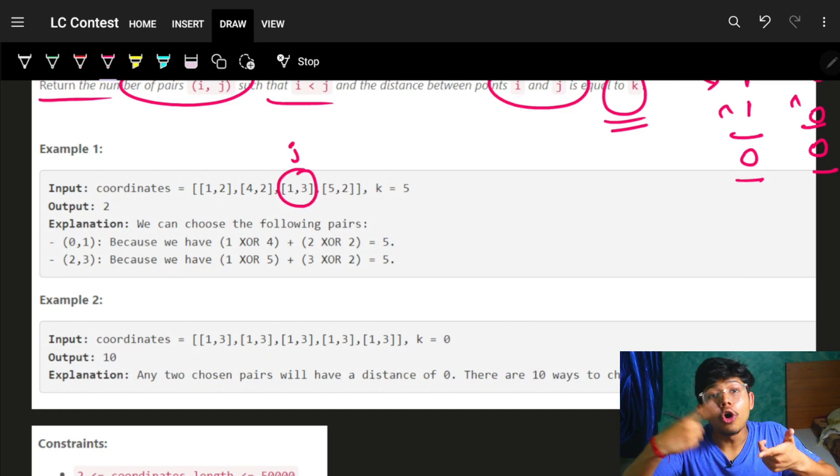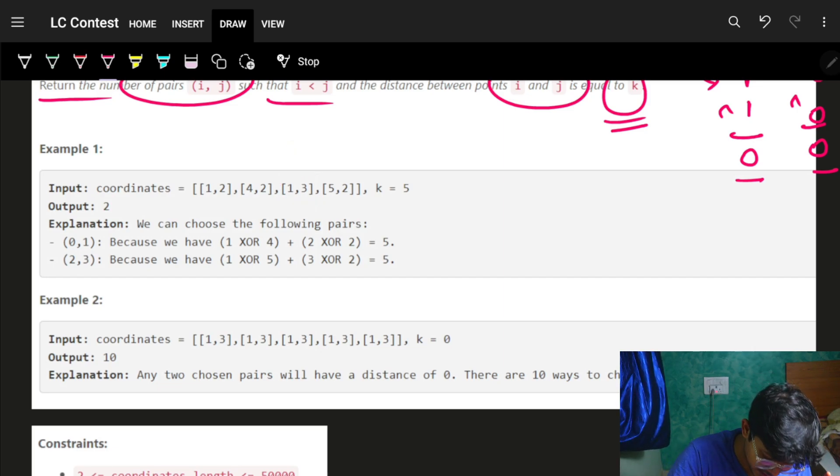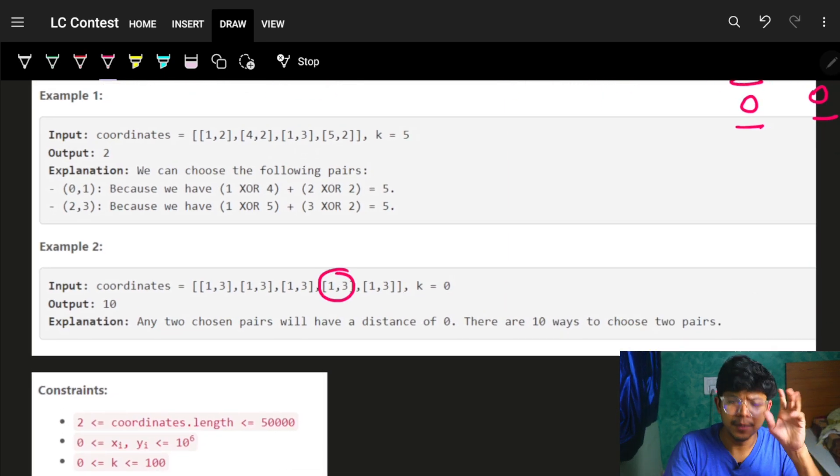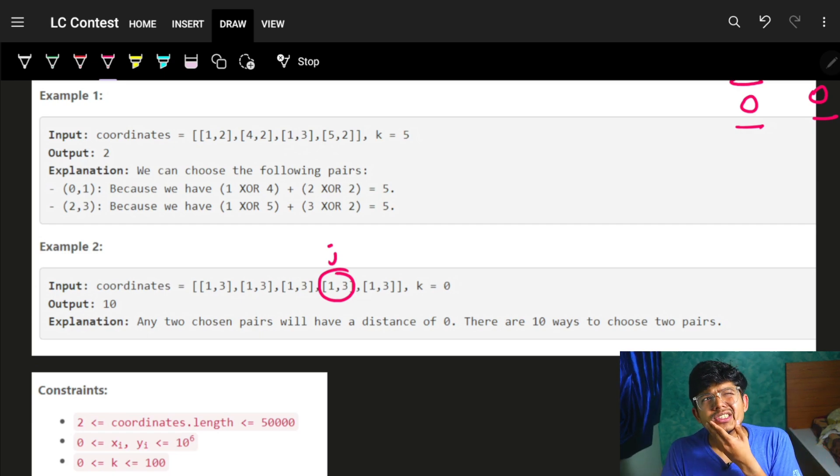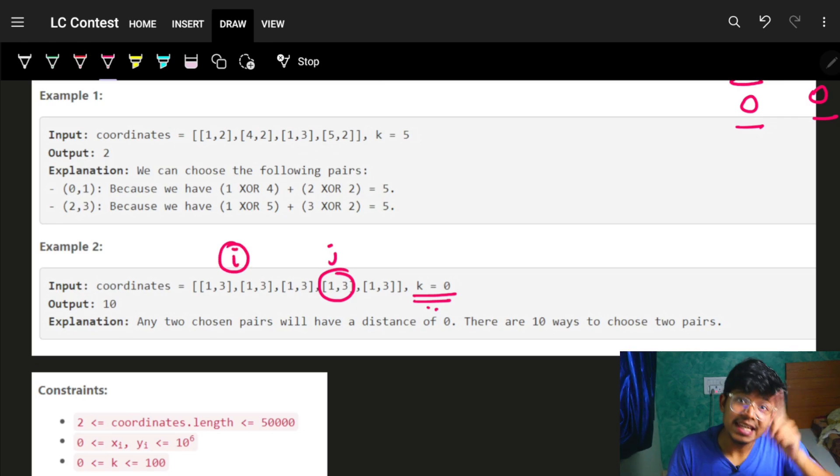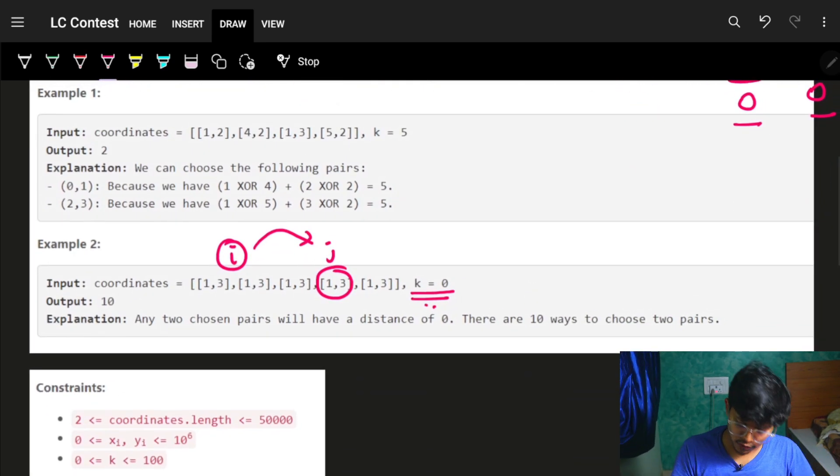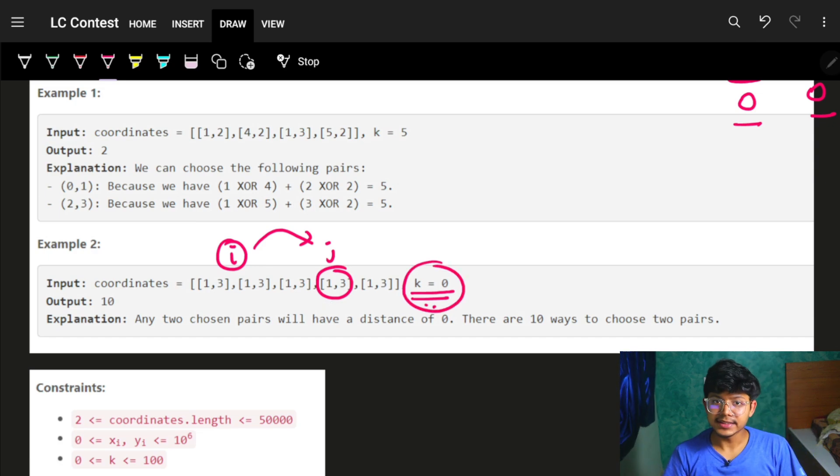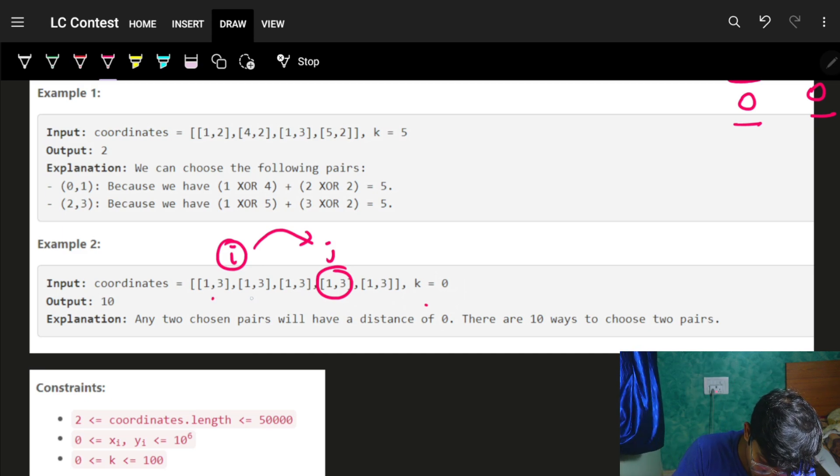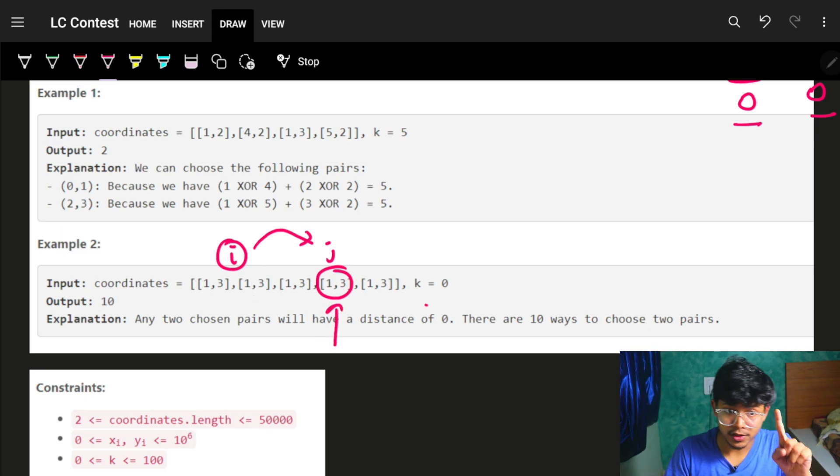What we usually do is land onto a j and predict what all i's would have been there. If I'm at this particular j, I can know: if I want the distance to be k, I want all such i's where the operation x1 XOR x2 plus y1 XOR y2 equals k.